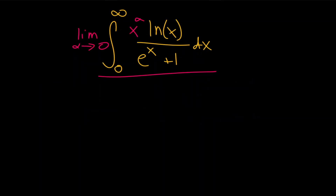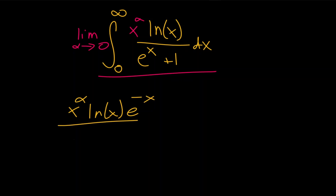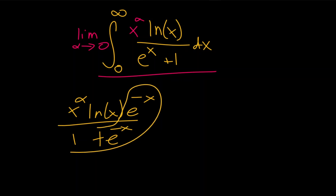To evaluate this integral we can employ integration by parts, namely by expressing the integrand as x to the alpha times the natural log of x times e to the minus x over 1 plus e to the minus x. Written like this, we can clearly see that the integral of this last factor is just going to be the natural log of 1 plus e to the minus x.